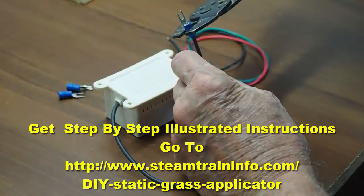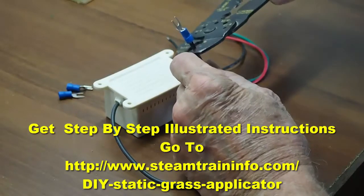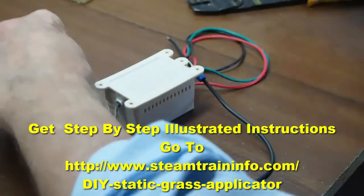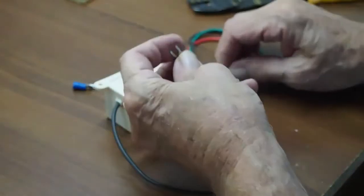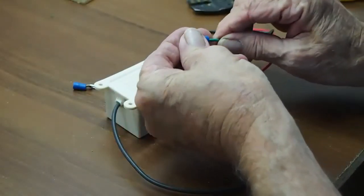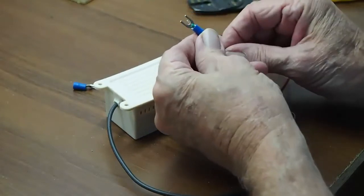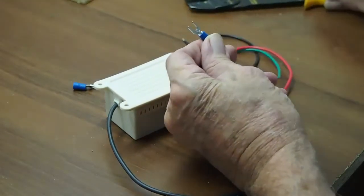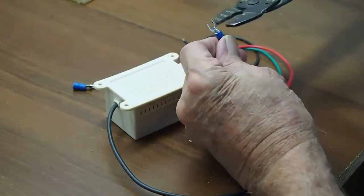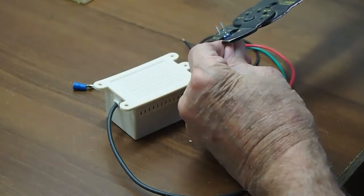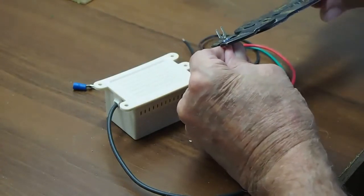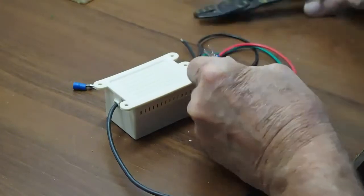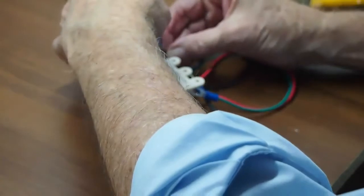I would point out that the configuration of this static grass applicator is quite versatile. You buy the commercial units, they are really blocky, they're heavy, they're difficult to handle, and they are very difficult to use if you have to get into a tight spot. When you make this, the output side can be attached to any form applicator you want.